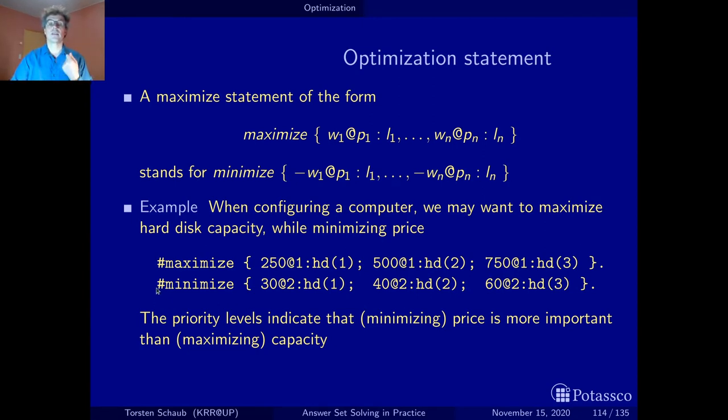Accordingly when we now have two configurations we first compare them by looking at which one has a smaller price for the hard disk configuration, and if they are both equal then we look at the capacity of the hard disks. That's the idea by ordering these two cost functions or objective functions lexicographically.